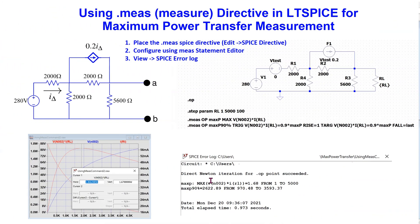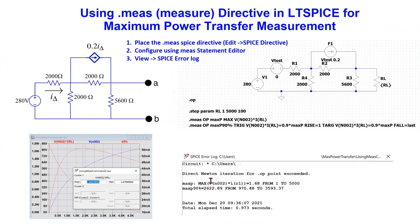In summary, in this video we have discussed the usage of the measure directive to find the values associated with maximum power transfer. The use of the measure directive avoids the need to place and drag cursors and read the data values of the plots — the measure directive gives us the value directly. The videos mentioned earlier in this video are linked here. I hope this video is helpful to your learning. Thank you for watching this video and supporting this channel.